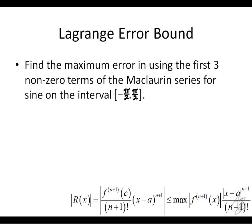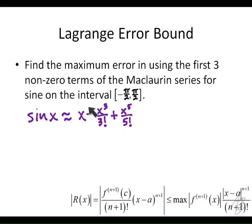What are the first three terms of the Maclaurin series for sine? We've got x minus x cubed over 3 factorial plus x to the fifth over 5 factorial — these are the first three non-zero terms. This function is what we're going to use to approximate sine, and it is an approximation for sine around zero.